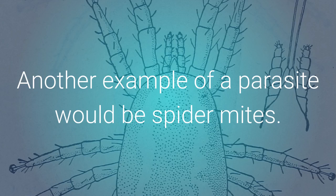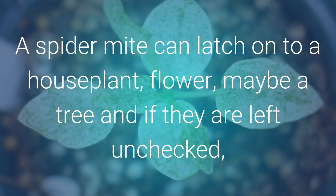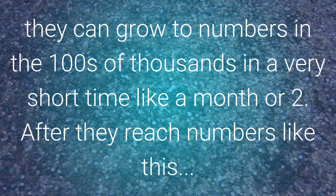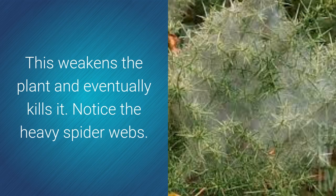Another example of a parasite would be spider mites. Spider mites live off another form of host body, such as a flower. A spider mite can latch on to a house plant, flower, or maybe a tree, and if they are left unchecked they can grow to numbers in the hundreds of thousands in a very short time — like a month or two. After they reach numbers like this, they basically overwhelm the plant by feeding off all the valuable nutrition destined for the health of the plant. This weakens the plant and eventually kills it.